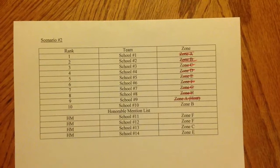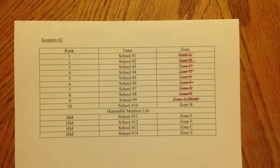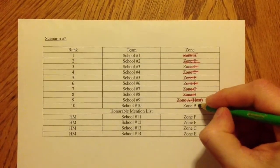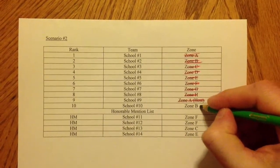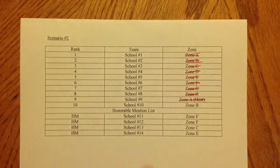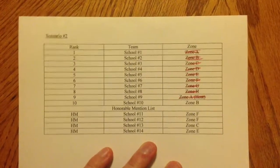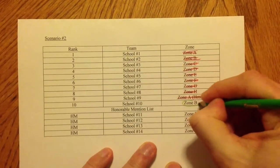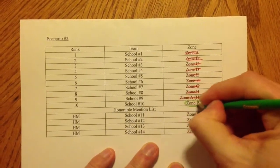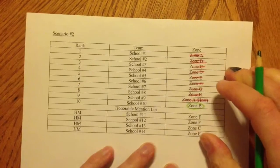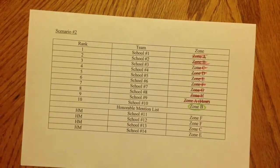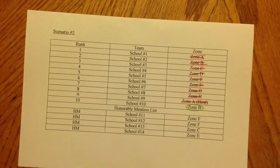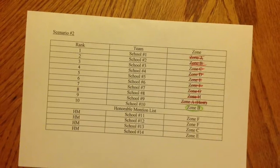You'll notice that Zone B has a second team in the top 10, so Zone B would earn that first wildcard berth. But now we've run out of zones in the top 10 to allocate wildcards to, so what we move to next is the next best solution: the honorable mention list.